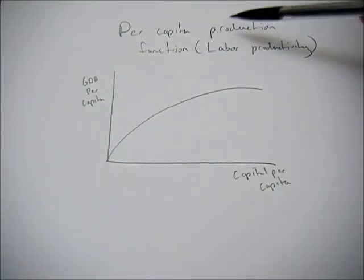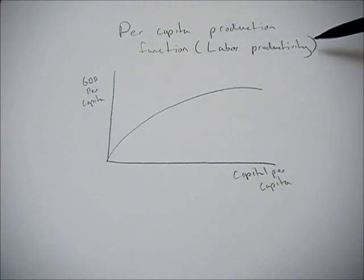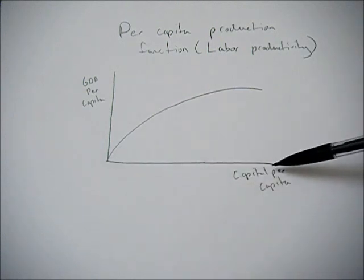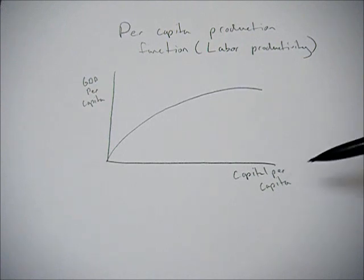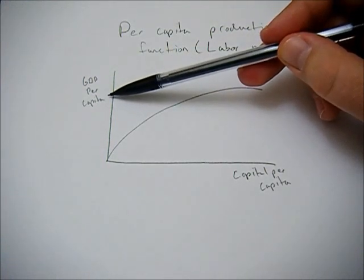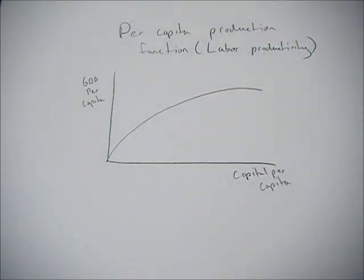This video is going to briefly go over the per capita production function, talking about labor productivity. This curve that I've drawn here shows the relationship between capital per capita, or the amount of capital, tools, and machines that each person in the economy has, and GDP per capita, so how much that person can produce.